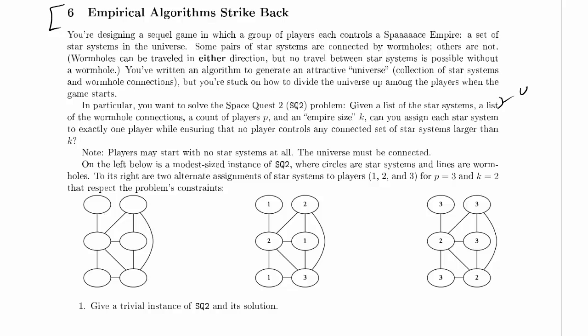So this time we've got an undirected graph right here. We're given a count of the players this time, P, and we're given an empire size, K. Can we assign each star system to exactly one player while ensuring that no player controls any connected set of star systems larger than K? So we want to assign each star system to exactly one player, and we want to ensure that no player controls any connected set of star systems larger than K.